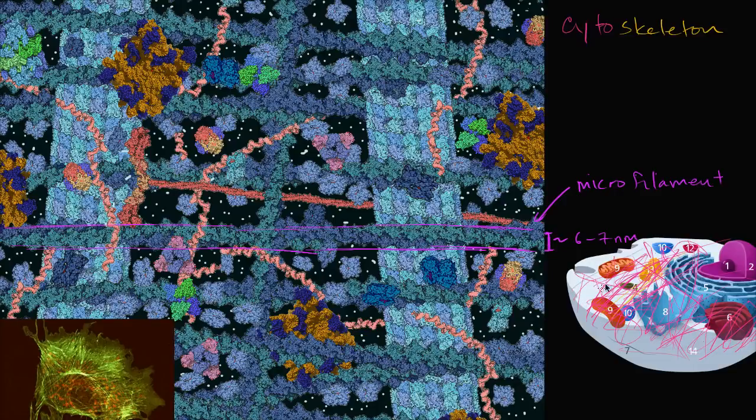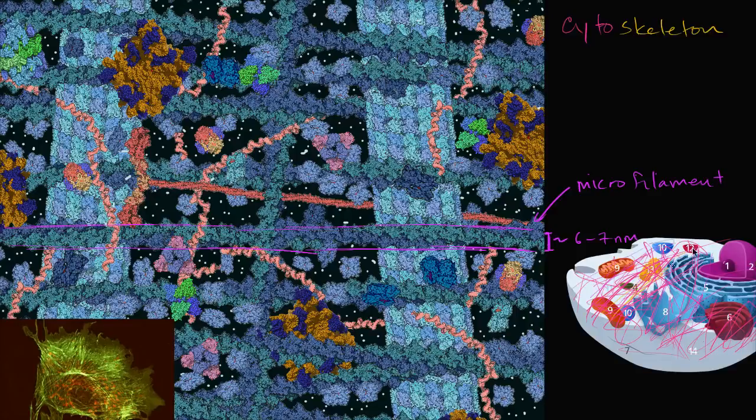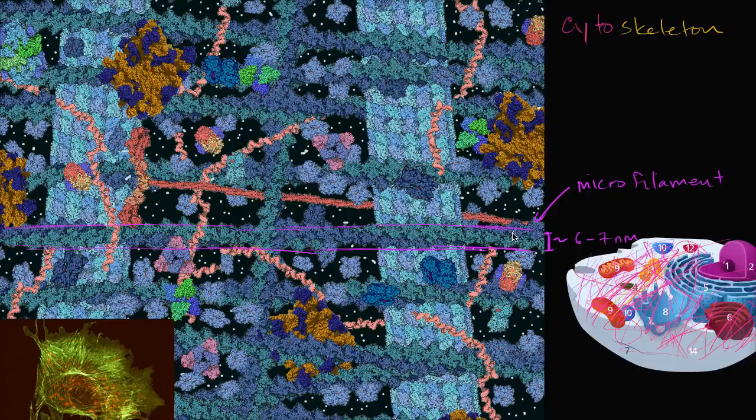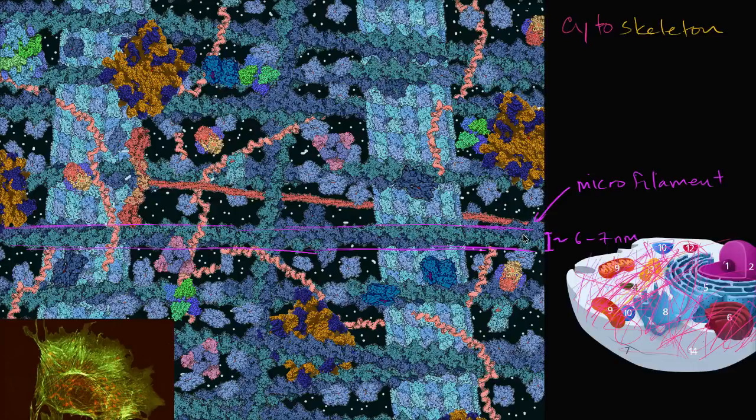So these things that I'm drawing right over here, these actually would not be that far off in terms of scale. I'd probably want to draw it even thinner. And that's why you often won't see it in these diagrams because you'd have to draw it so thin. The diameter of one of these filaments is roughly, order of magnitude, a thousandth of the diameter of a fairly typical cell.